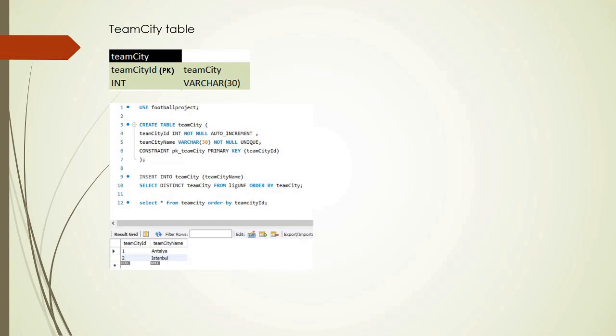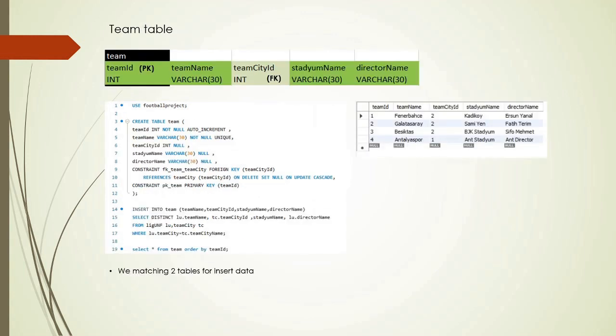The fourth table is the team city table. It gives information about which city the team belongs to. We use the UNIQUE constraint on team city name because every city has a unique name, though we use team city ID as the primary key for better understanding. The fifth table is the team table, which contains information about teams. The primary key is team ID and there is a foreign key as team city ID.